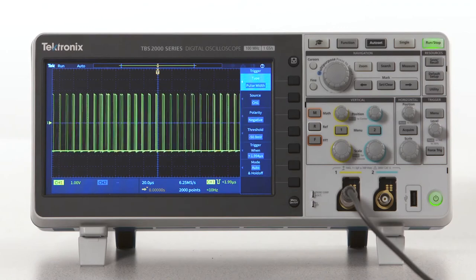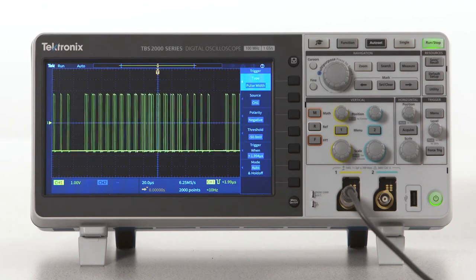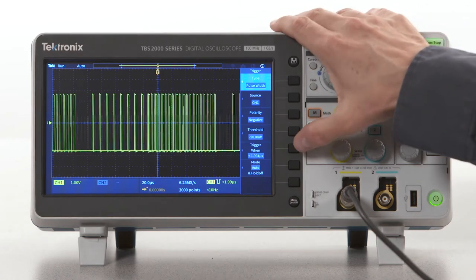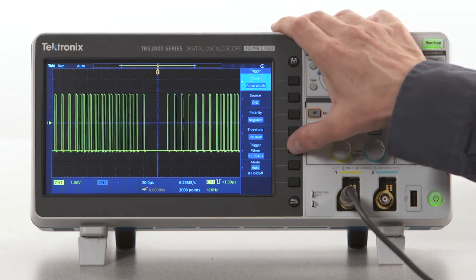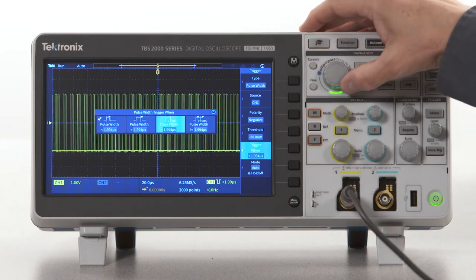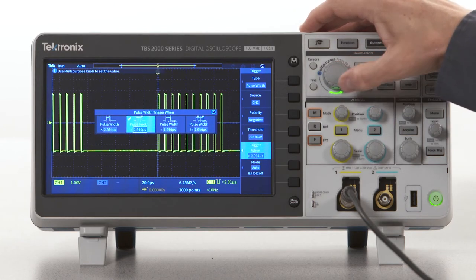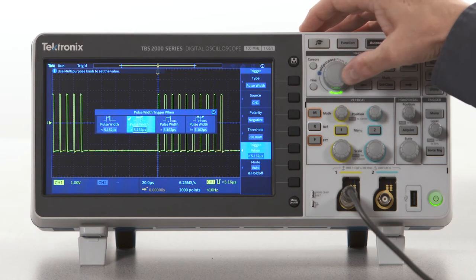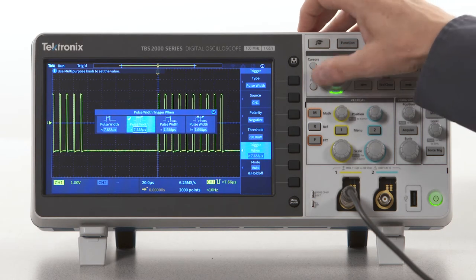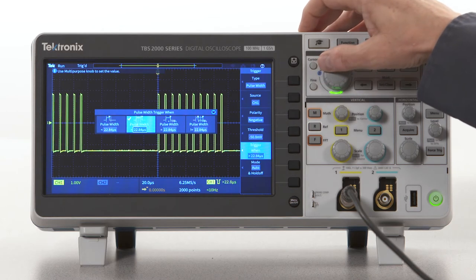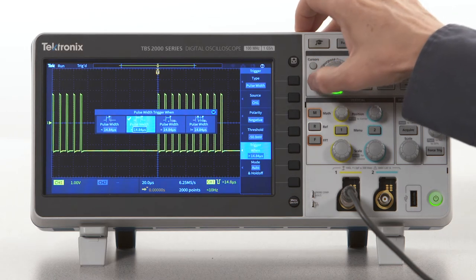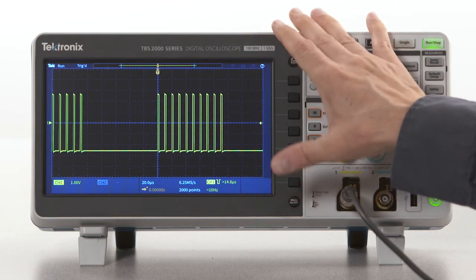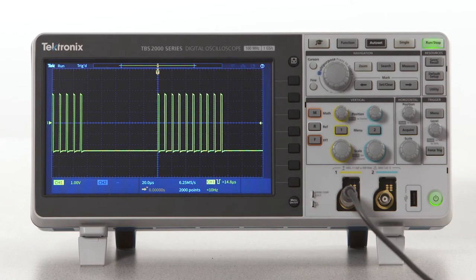On communication buses, you'll see a lot of clocks that come in bursts. Here's a 100 kilohertz clock that comes in bursts every 200 microseconds. Pulse width triggering can be used for this, too. The clock period is 10 microseconds, and the positive part of the clock is 5 microseconds. So we'll look for the dead time at the front of the burst by setting the pulse width trigger for a negative pulse greater than 10 microseconds or so. As you can see, the scope triggers just before the clock burst.